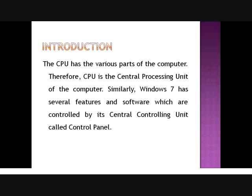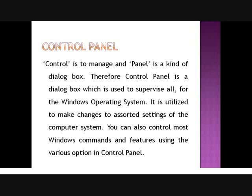Similarly, Windows 7 has several features and software which are controlled by the central controlling unit, which is called the Control Panel. A control panel is a system folder using which we can change the appearance and current settings of Windows. The name suggests: 'control' is to manage, and 'panel' is a kind of dialog box. So the control panel is a dialog box which supervises and controls the whole computer system. It is utilized to make changes to the sorted settings of the computer system.